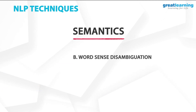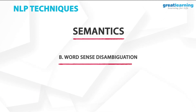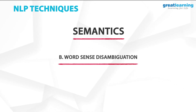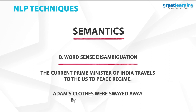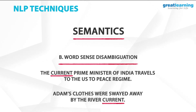The second semantic technique is called Word Sense Disambiguation, which means giving meaning to a word based on its context. For example, in the sentence the current Prime Minister of India travels to the U.S., the word current means present. But in Adam's clothes were swayed away by the river current, current means a flow of water. The meaning of current is different based on the context of the sentence.